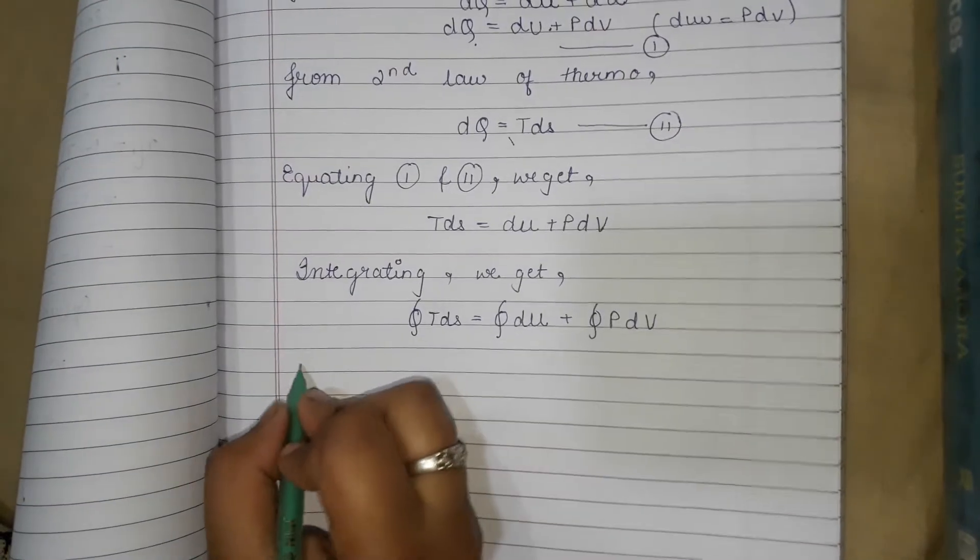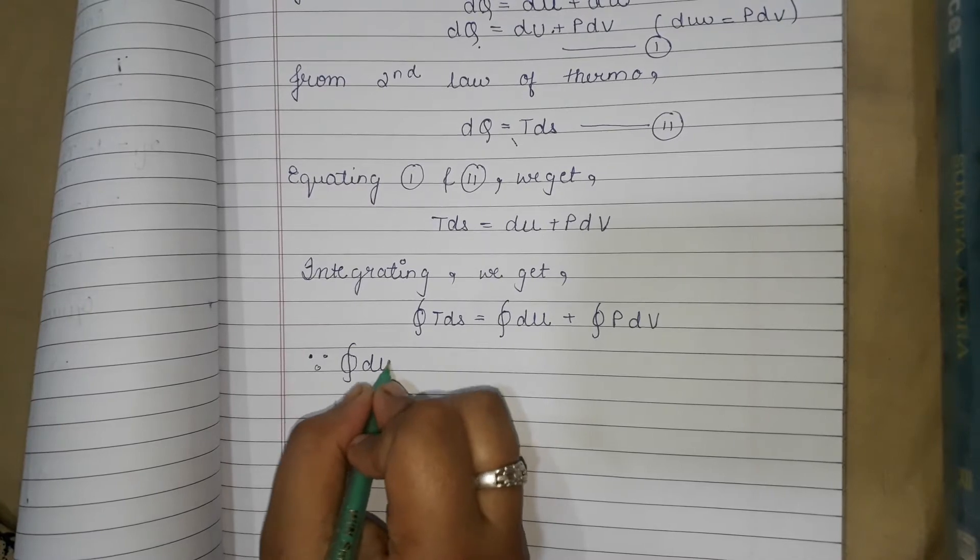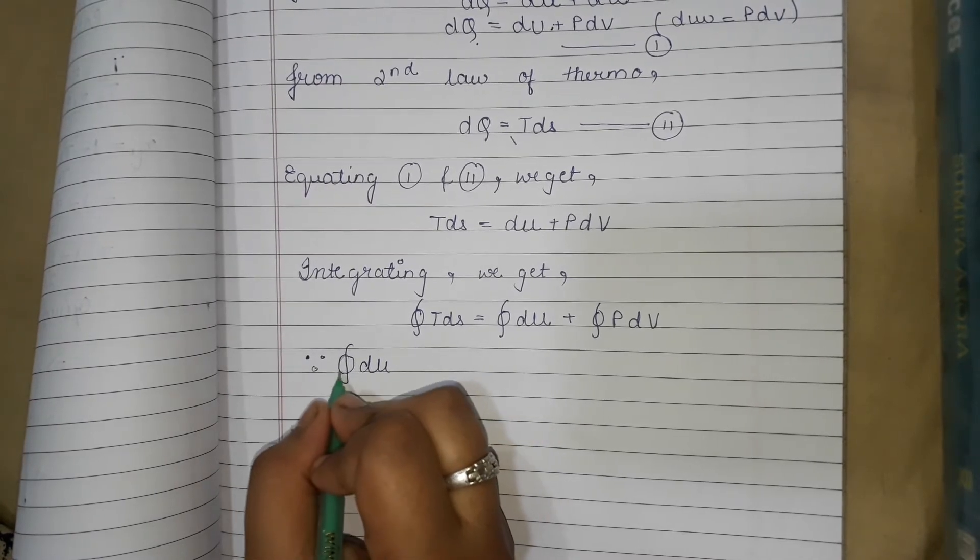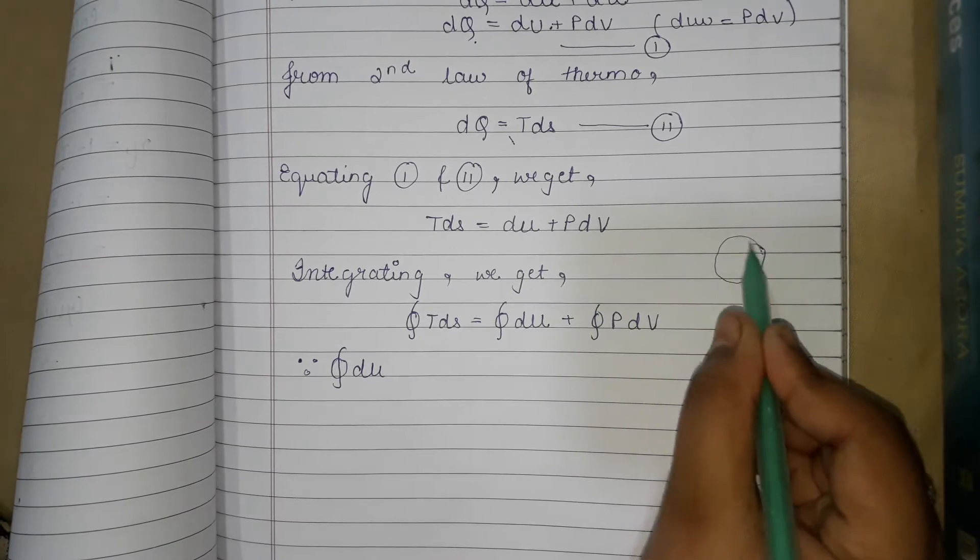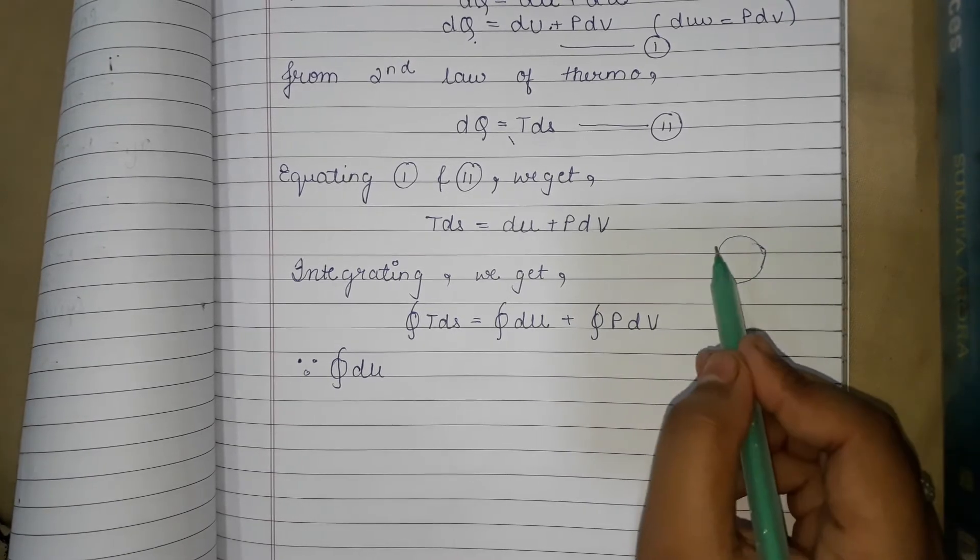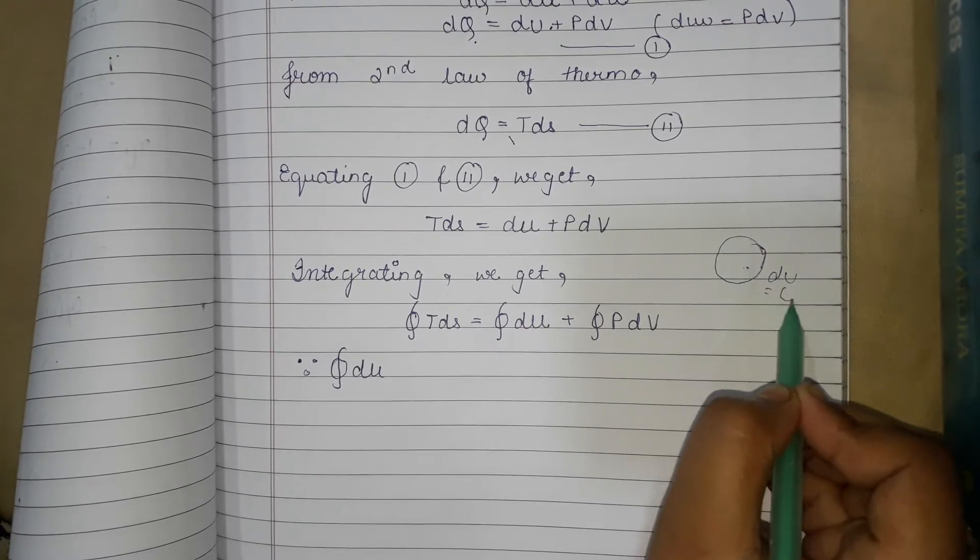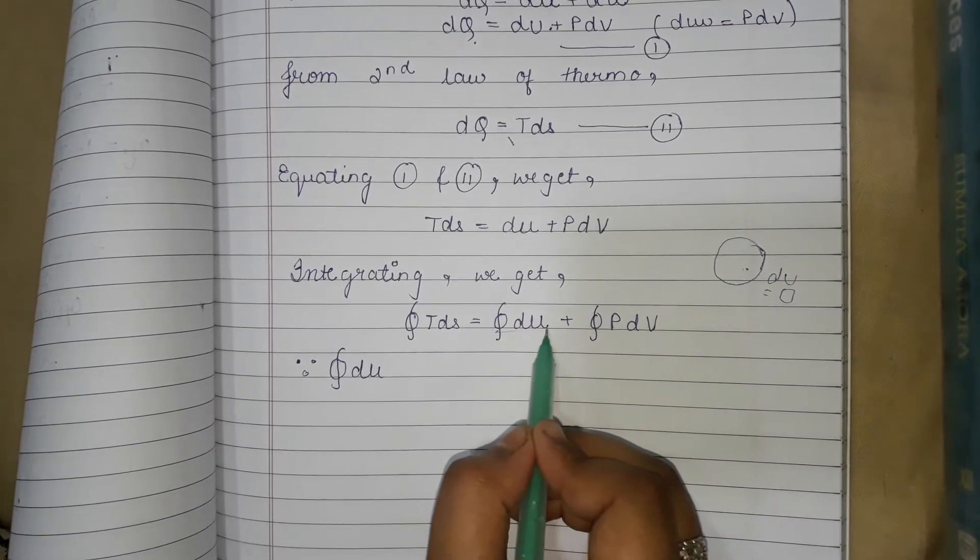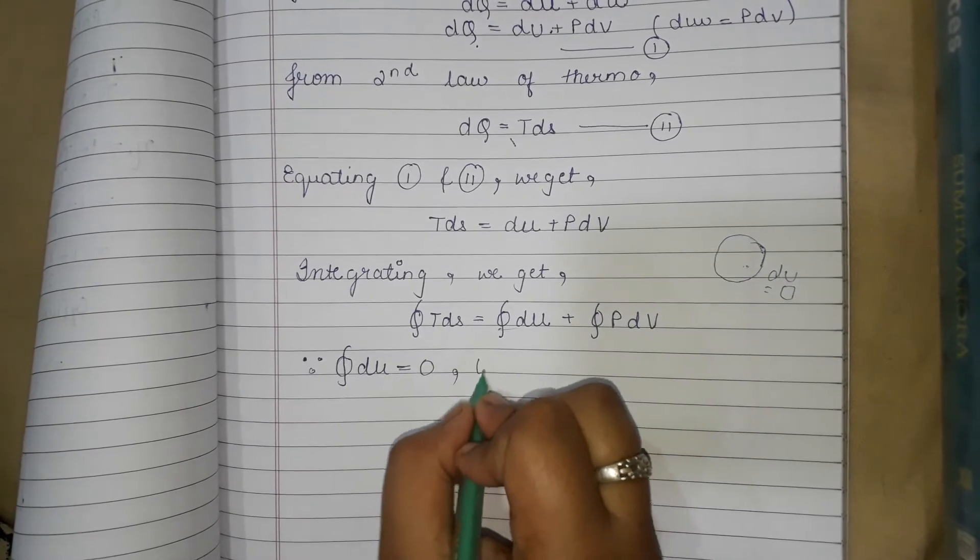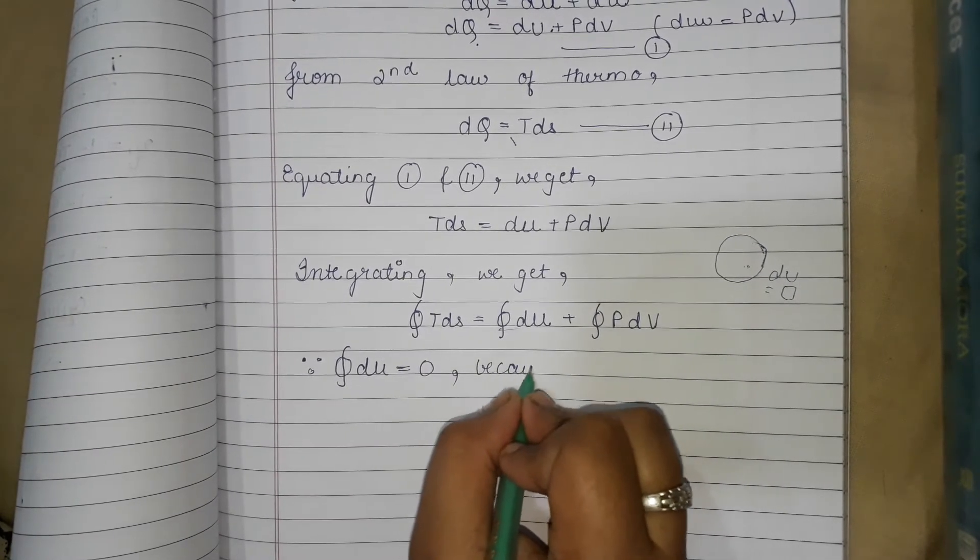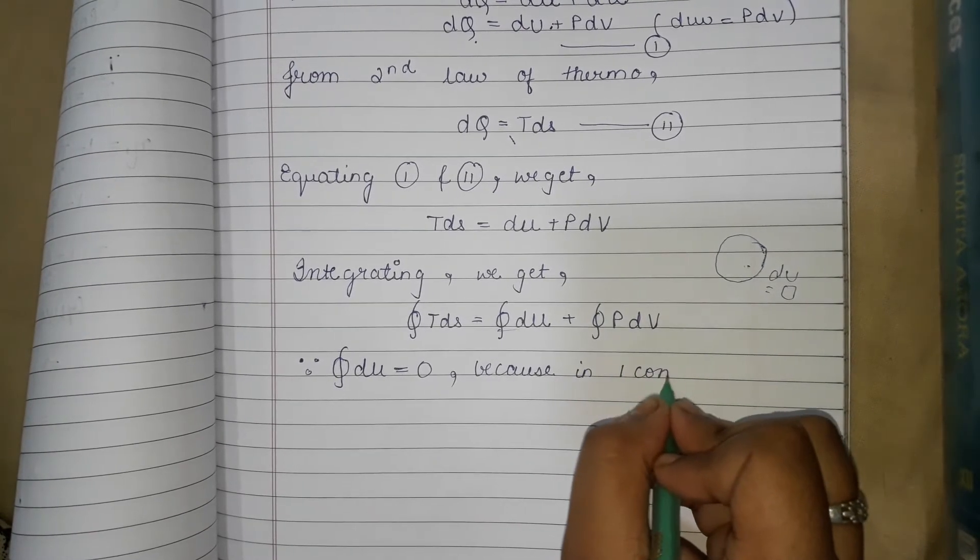But in a closed path, in one complete cycle, this quantity will be zero.